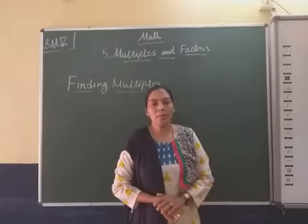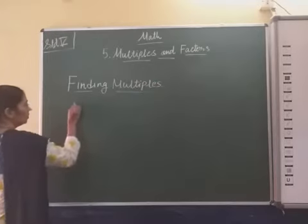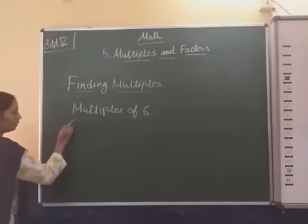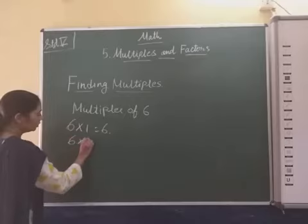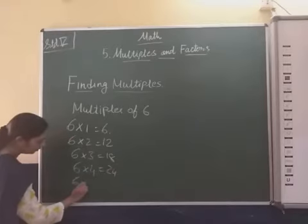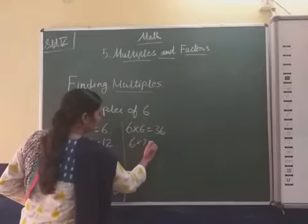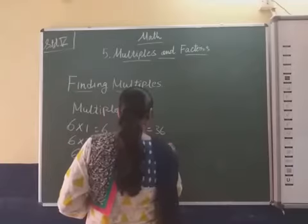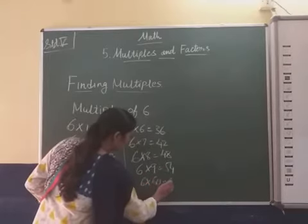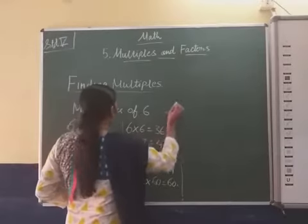Now, finding the multiples — if we find the multiples of 6, we write the number 6 and then write its table. First we write the table of 6, then we write the multiples of 6.